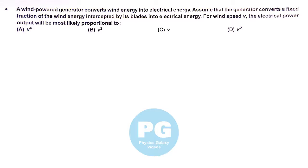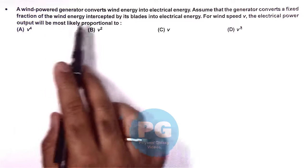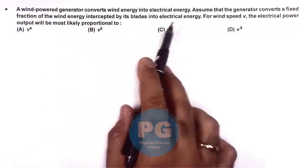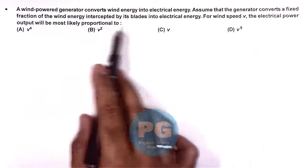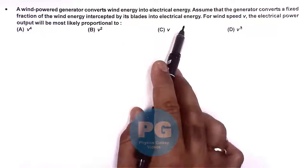In this question we are given that a wind powered generator converts wind energy into electrical energy. Assume that the generator converts a fixed fraction of the wind energy intercepted by its blades into electrical energy.